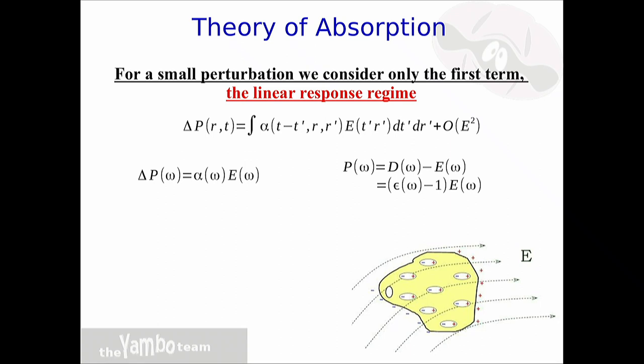The object alpha, which is the polarizability of the system, can be used to define the dielectric function, which is what we learned yesterday. One just takes this relation and plugs it into the equation relating polarization, electric displacement, and electric field, and replaces the electric displacement as the dielectric function times the field. There is a relation between epsilon(omega), the dielectric function, and alpha(omega). This is what one computes and uses to compute the dielectric function in frequency space.